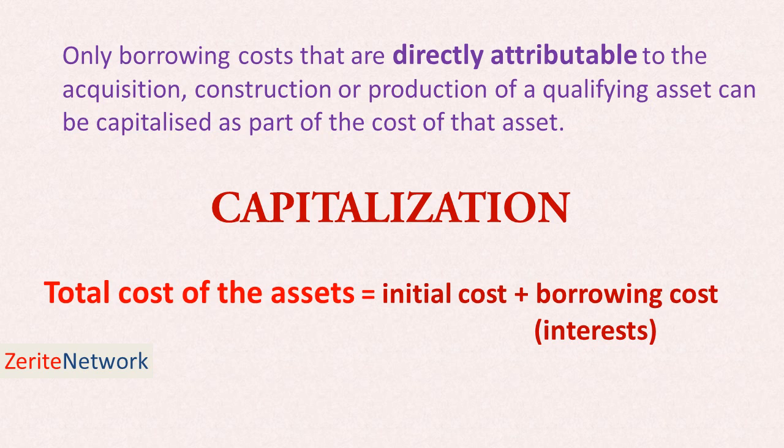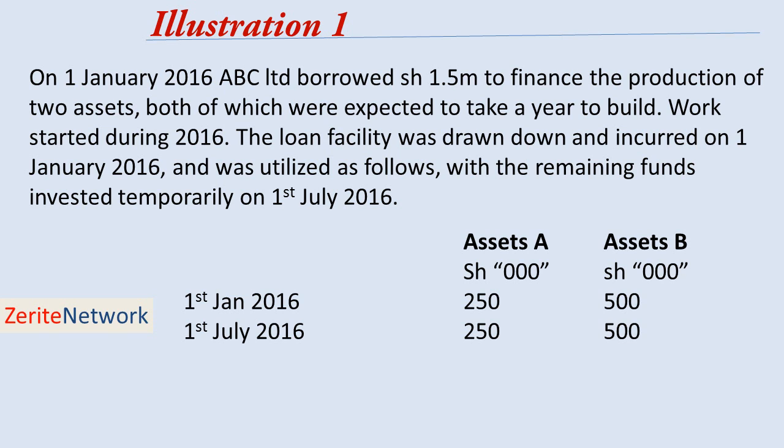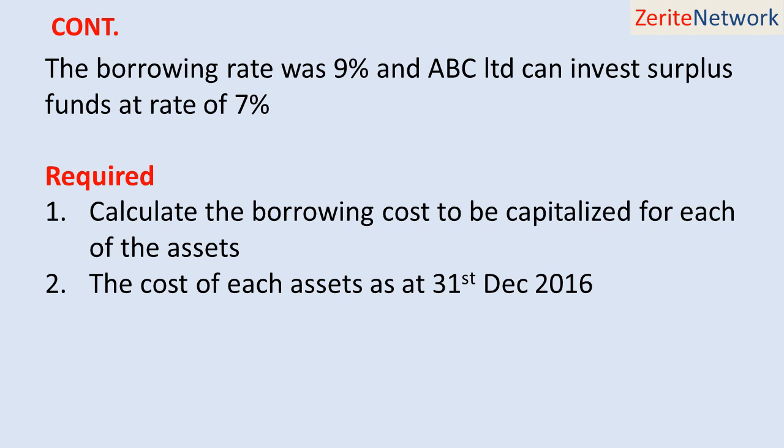Here is an illustration — the question is in the notes, so you can download and check it out. On 1st January 2016, ABC Limited borrowed $1.5 million to finance the production of two assets, both of which were expected to take a year to build. Work started during 2016. The loan facility was drawn and incurred in January 2016 and was utilized accordingly, with the remaining funds invested temporarily on 1st July 2016. The borrowing rate was 9% and ABC Limited can invest surplus funds at a rate of 7%. Required: calculate the borrowing cost to be capitalized for each of the assets, and the cost of each asset as at 31st December 2016.